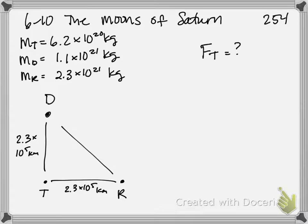So the way to find the net force on Tethys, remember that gravity is always attractive. So Dione is going to pull Tethys this way. Rhea is going to pull Tethys this way. And so we're going to ultimately get a first quadrant vector for our resultant. So before we can find the net force on Tethys, we need to calculate each force individually.